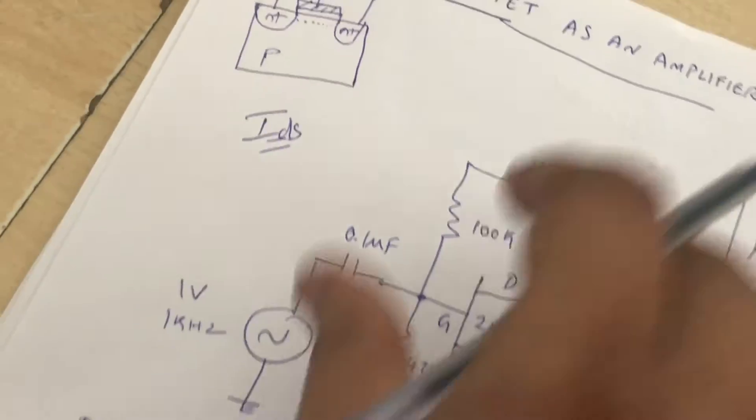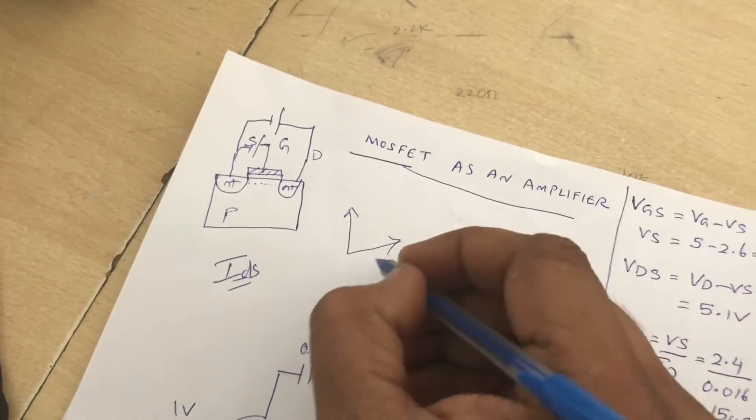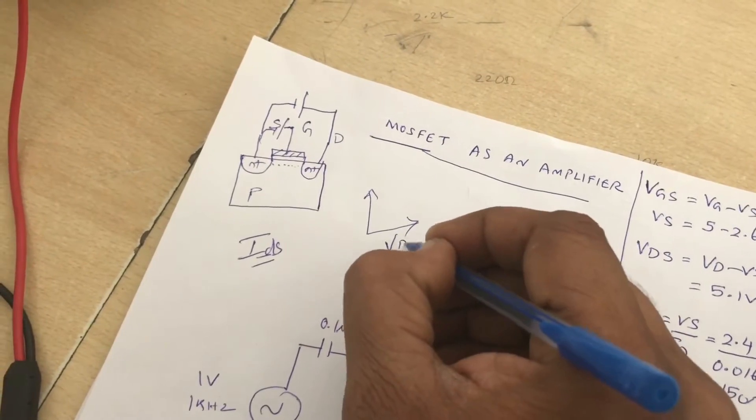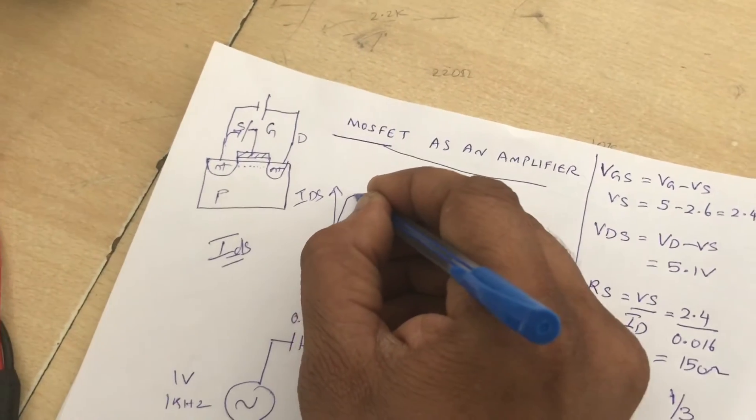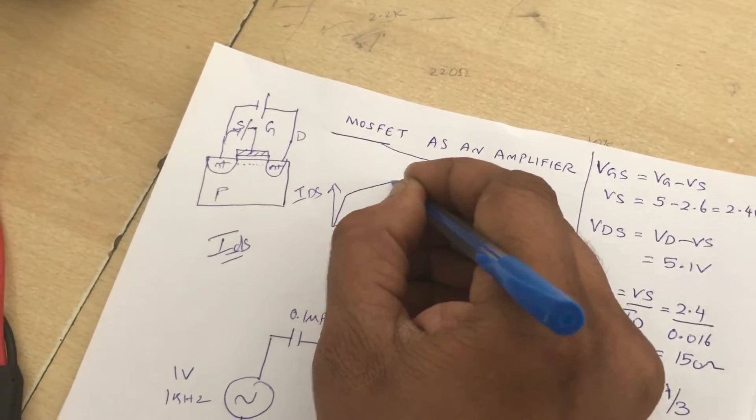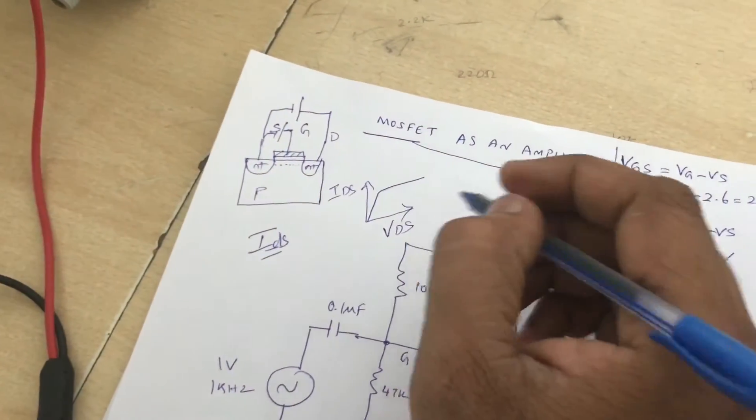Now if you see the characteristics of the MOSFET, for a fixed gate-source voltage, the current starts increasing, then the channel will be pinched off and the current will be constant. So we are going to operate MOSFET in this particular region where the current is constant.